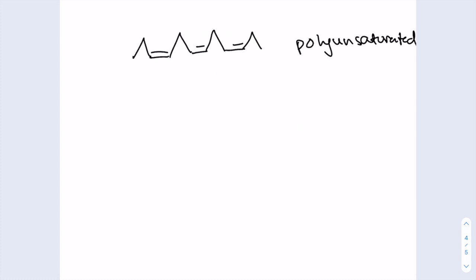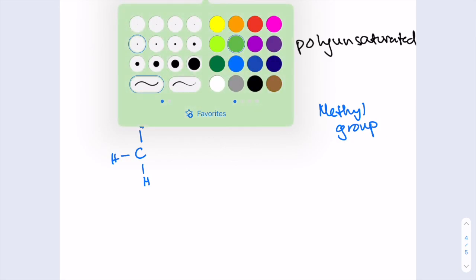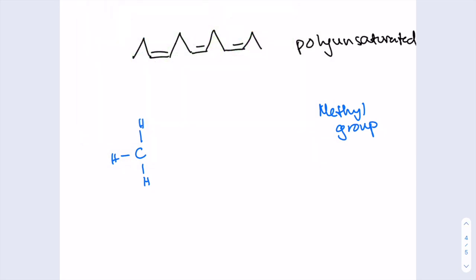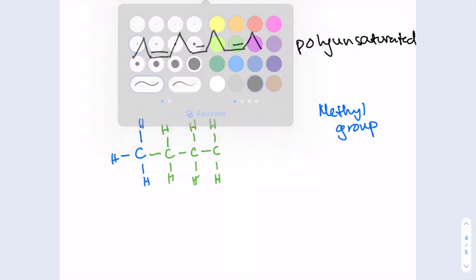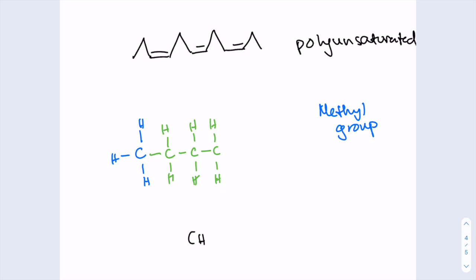So the second way that we have to know how to draw fatty acids is the expanded form. So firstly, we have the methyl group, which is CH3. Then there's the hydrocarbon chain, which can be N carbons long. So basically, this length varies from fatty acid to fatty acid.